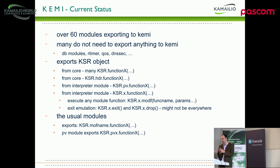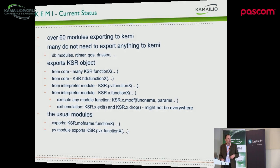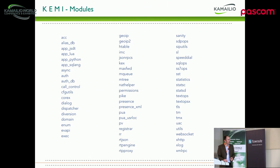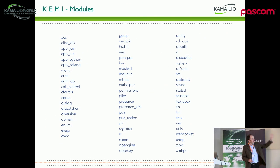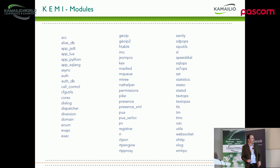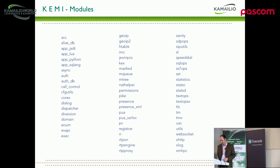Pretty much everything is like KSR.module_name.function. We still need to make some decisions, because many functions have the module name already as a prefix underscore. We have to decide whether to keep that for a one-to-one relation or remove it when we have the module name before it. A couple of examples: authentication is there, TM, TM extensions, NAT traversal, JSON.